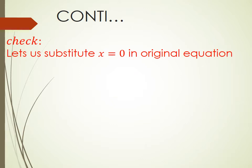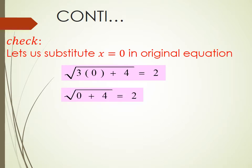Check for extraneous value or extraneous solution or root. We will put x equal to 0 in the original equation. We get square root of 3 into 0 plus 4 equal to 2. After simplifying, we get square root of 0 plus 4 equal to 2 and square root of 4 equals to 2. We get 2 equal to 2. When we substitute the value x equal to 0 in the original equation, right-hand side equals left-hand side.